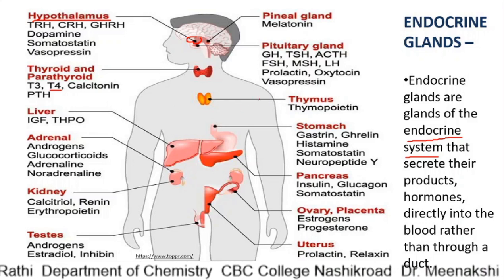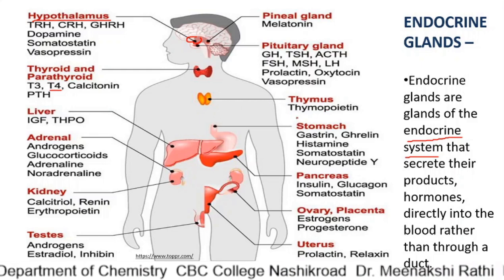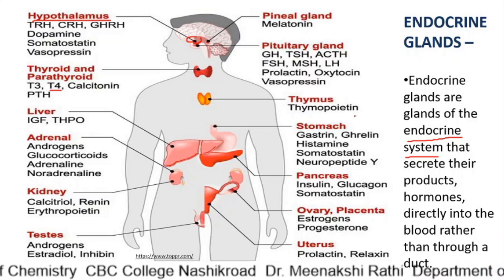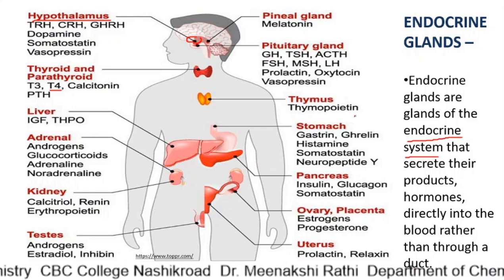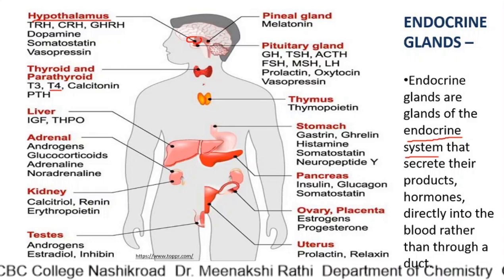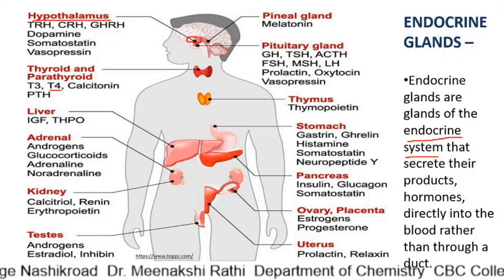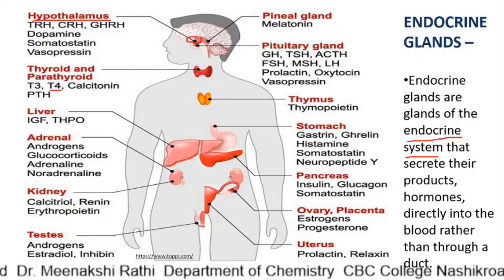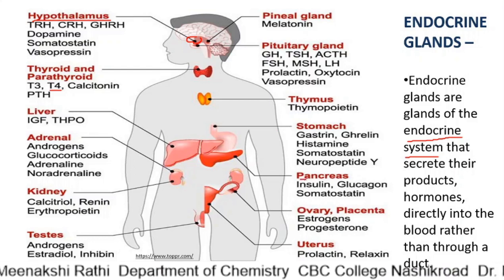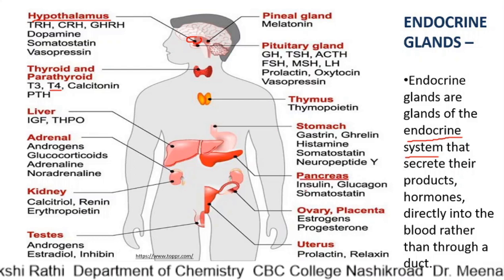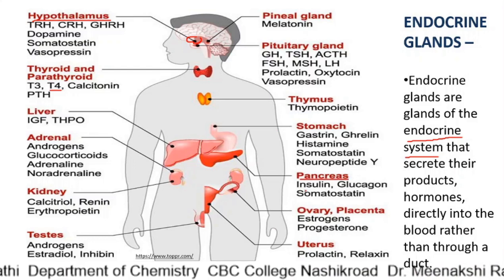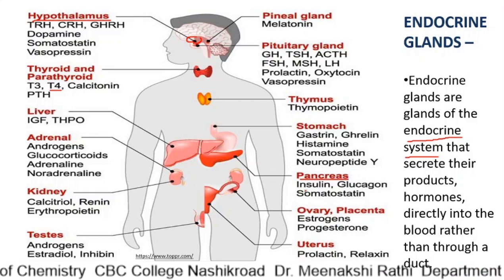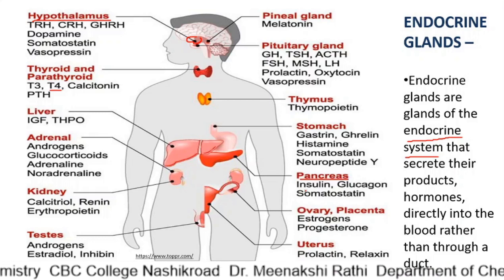The thymus secretes thymopoietins. There are six major glands. The pancreas is one of the main glands, secreting insulin, glucagon, and somatostatin.